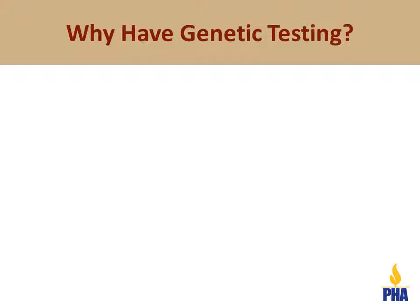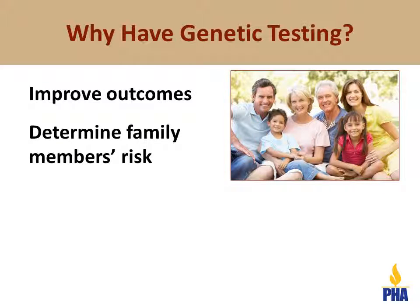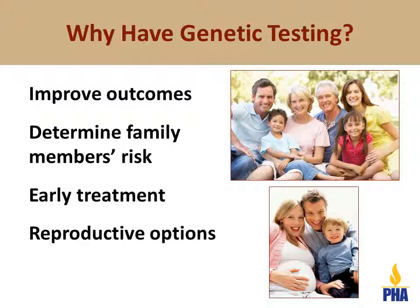Why might you or your family want to know if there is a genetic cause for the pulmonary hypertension in your family? We believe that early diagnosis of pulmonary hypertension will improve outcomes, although this is not known for certain. Knowing the genetic cause can be used to test other family members who may have the same gene mutation. Knowing who is at risk will also help to make sure that they receive treatment as soon as they show symptoms. In addition, some families might want to know if there is an increased risk of having a child with pulmonary hypertension so that they can use this information to make decisions about family planning. Not all families are concerned about this since most individuals with BMPR2 mutations never develop pulmonary hypertension.